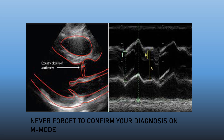Once you are sure about your diagnosis, it is always better to confirm with a contributory finding from M-mode imaging, where the eccentric closure can give additional support to your diagnosis. This eccentric closure of the aortic leaflet is a very important contributory finding from M-mode imaging, and you must take the help of M-mode for diagnosis of the bicuspid aortic valve.